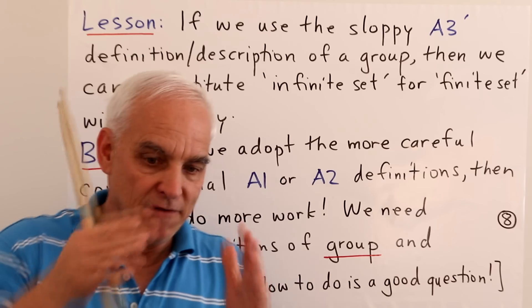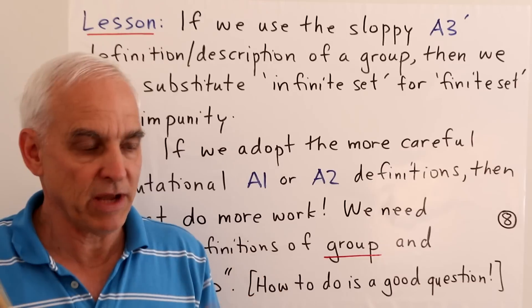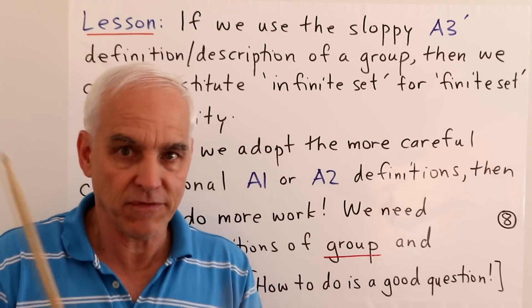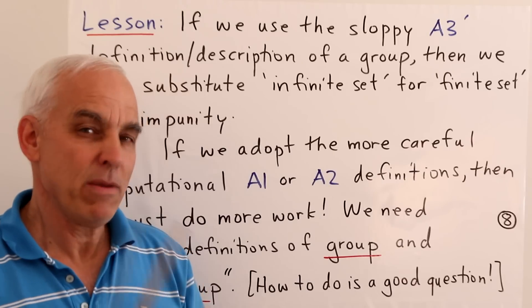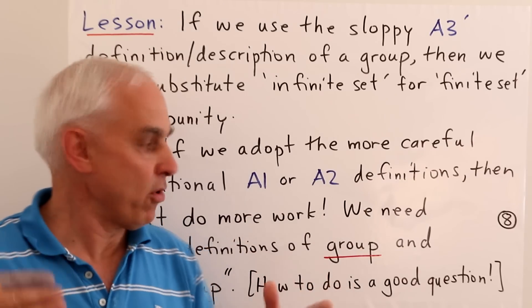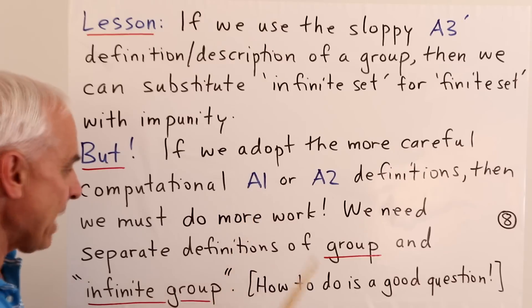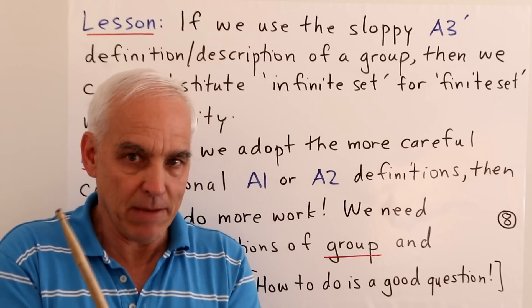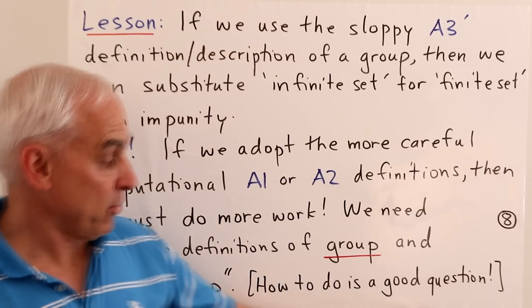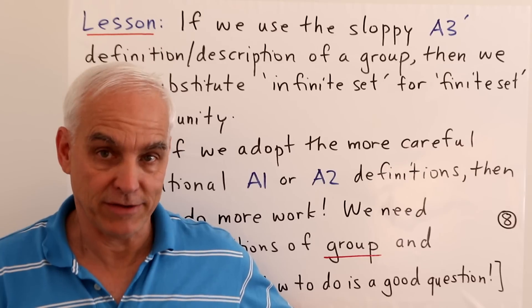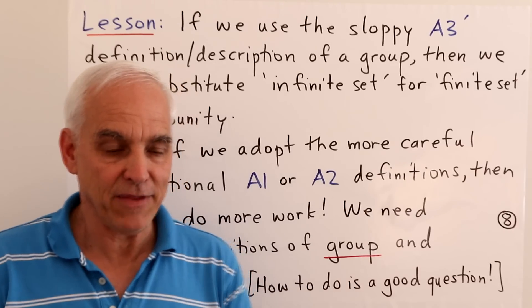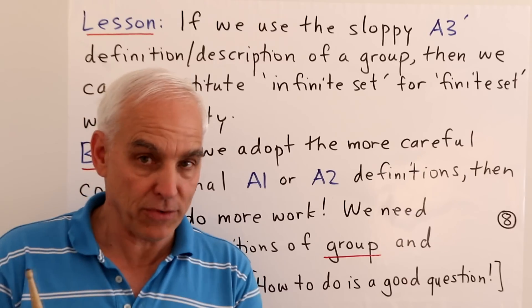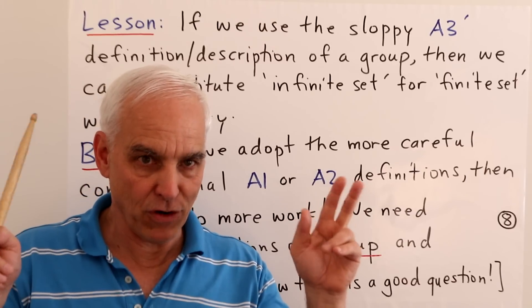If we want to go from the finite group definition to an infinite group definition, it's not enough just to replace the word group or finite group with the word infinite group. We must actually understand things from a different point of view. So we're going to need separate definitions of group and infinite group. These are not going to be things which are found in the same basket. How to do this is a very good question, and we are going to talk about that. But at this point, I just want to flag that there is a big jump, if you're going to do things properly, between understanding finite, concrete, explicit objects, and infinite versions of them.